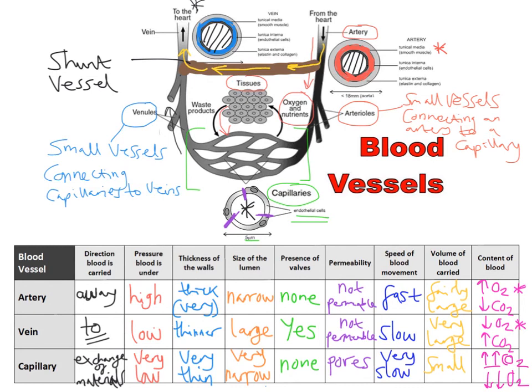So there we have a comparison of the three types of blood vessels — artery, vein and capillary. We've talked about the structure using the diagram at the top, defined arteriole, venule and shunt vessel, and explained how shunt vessels are designed to bypass the capillary network. Using the table at the bottom, we've taken a variety of factors to compare the artery, vein and capillary in terms of direction of blood flow, pressure, thickness of the wall, and more. All of that information for IGCSE is on-spec. Hope all that helps.